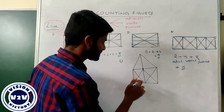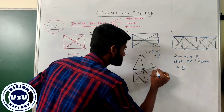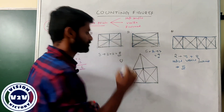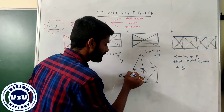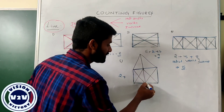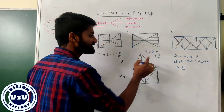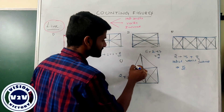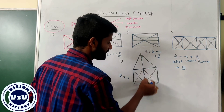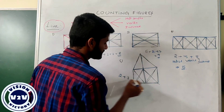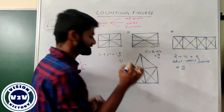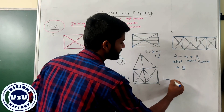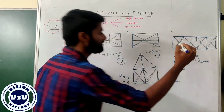For this question, the number of horizontal lines: here one horizontal and here two horizontal — the number of horizontal lines are two. Number of verticals: one, two — this entire line I consider as one line — the total number of vertical lines are three. For the inclined lines: one, two, three, four, five, six — the total number of inclined lines are six. The total number of lines in this figure is equal to 11. This is the concept of lines.